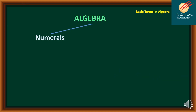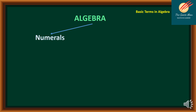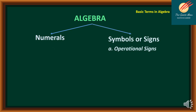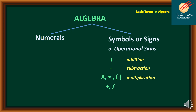Numerals are determiners of quantity, so we have the symbols 0, 1, 2, 3, 4, 5, 6, 7, 8, and 9. For operational signs, we have the following symbols: plus or addition, subtraction, multiplication, division, and the root or square root.